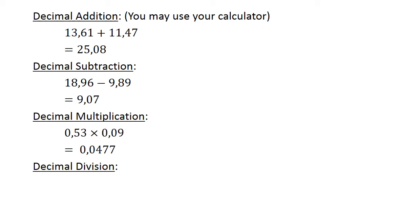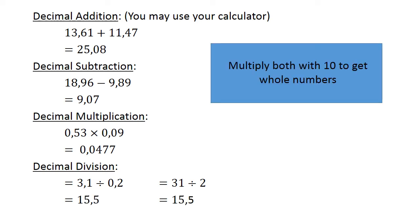Decimal division. 3.1 divided by 0.2. Multiply both with 10 to get whole numbers, equals 15.5.